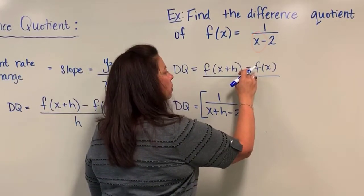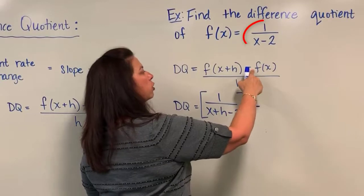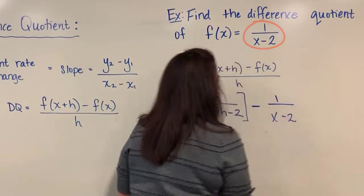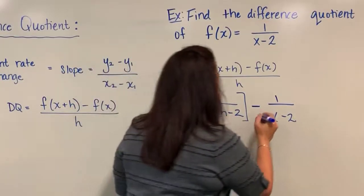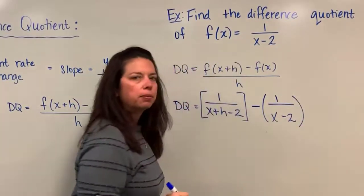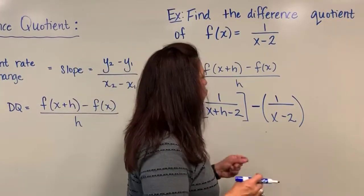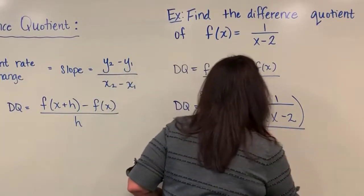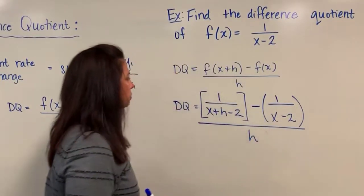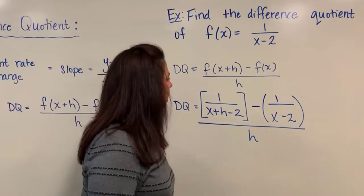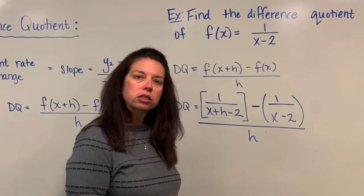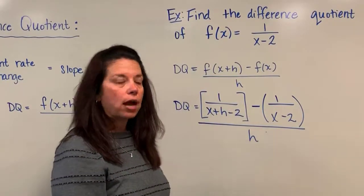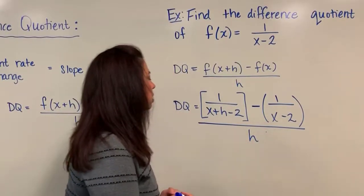Now I'm going to continue on with my difference quotient. I will subtract the original function f of x, which is 1 divided by x minus 2. I want to be very careful — let's go ahead and put that in parentheses. It really doesn't impact things right this minute, but it is a nice habit to get into. And then of course, all of this is still divided by h. So I can now think about this as two fractions in the numerator being subtracted, and all of that is contained in this larger fraction that has the h in the big denominator.